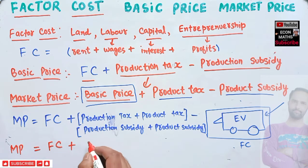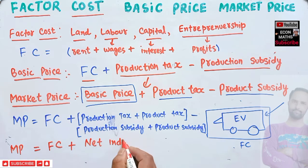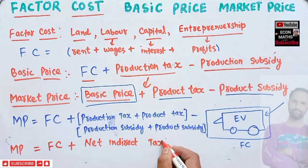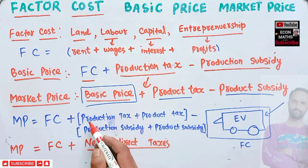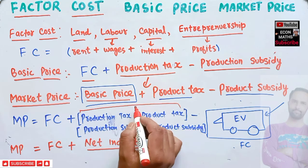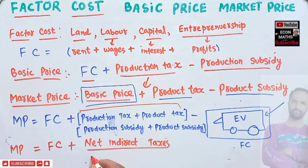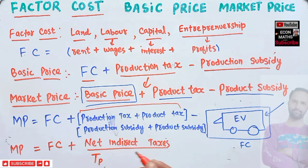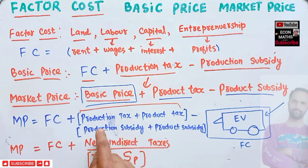Net indirect tax is the difference between total tax (production tax plus product tax) and total subsidy (production subsidy plus product subsidy). So market price equals factor cost plus net indirect tax. When you aggregate all this across an economy, you get GDP at factor cost, GDP at market price, and GDP at basic price.